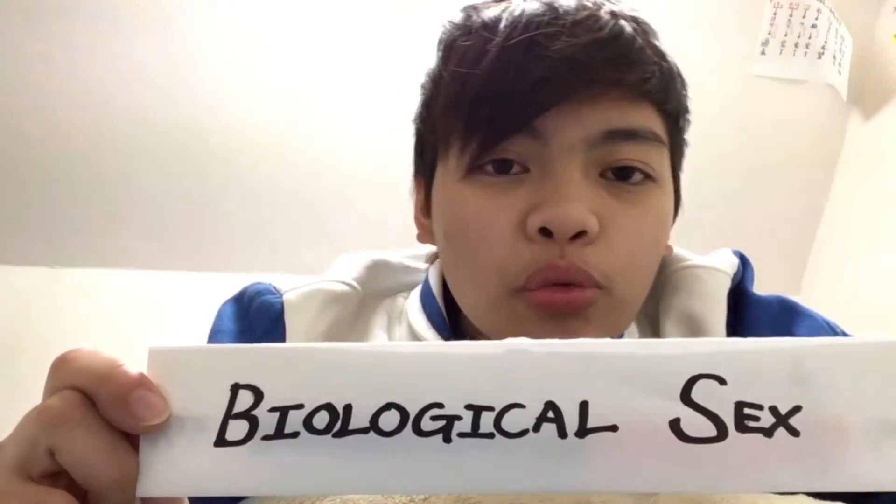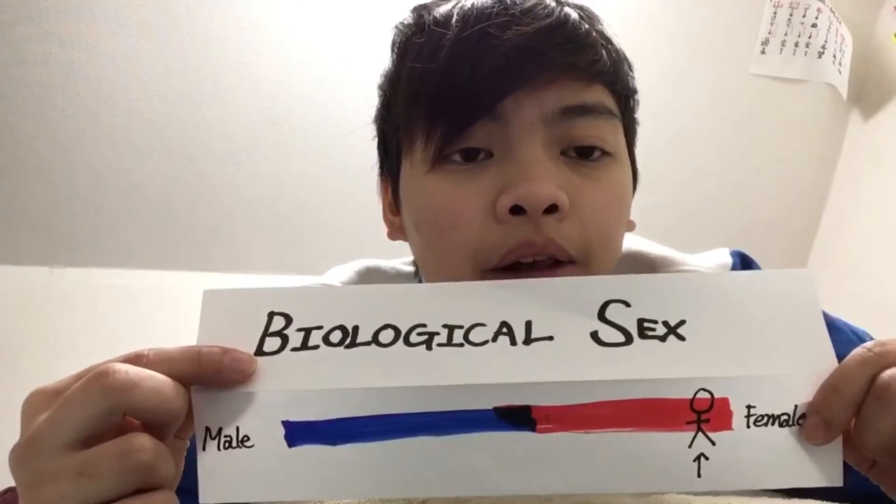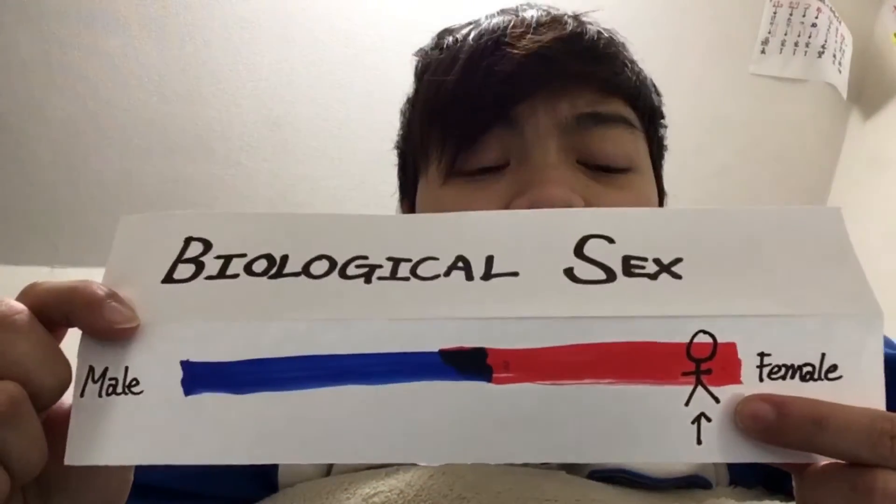So the first part of my gender spectrum is biological sex. Biological sex is basically the sex you were assigned when you were born. Usually it's divided by male and female, but there are some rare cases called intersex where their DNA — I'm not really sure exactly what it is, but it's quite complicated. For me, I was born a girl, so I put myself on the female side of my biological sex graph.